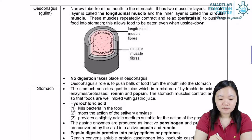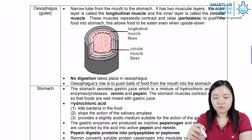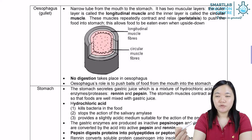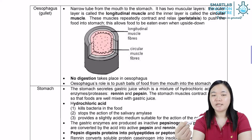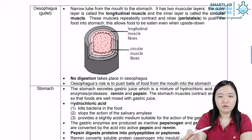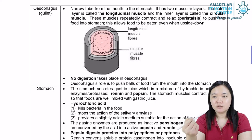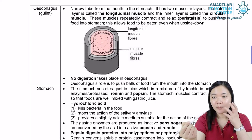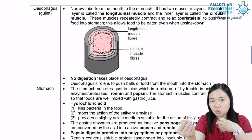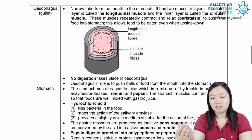The esophagus is a narrow tube from the mouth to the stomach. In other words, the esophagus is a connecting tube — it connects the mouth to the stomach. So when you swallow or feed your mouth with any food, it will pass through the esophagus to reach the stomach.